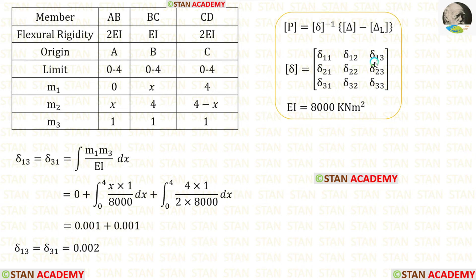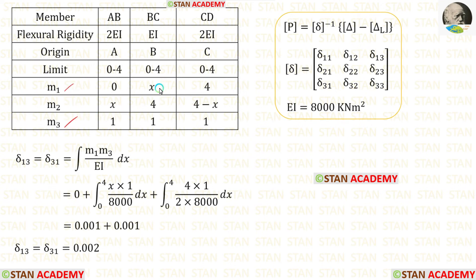Now let us find δ₁₃ and δ₃₁. The formula is ∫M1·M3/EI dx. Applying the values of M1 and M3, integrating, and adding the two values gives δ₁₃ = δ₃₁.